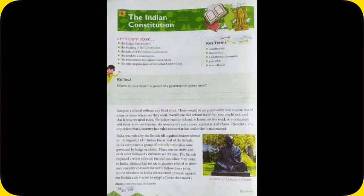Imagine a school without any fixed rules. There would be no punctuality and anyone would come or leave whenever they want. Would you like school then? No, you would not, and this is why we need rules. We follow rules in school, at home, on the road, in a restaurant, and even in movie theatres. An absence of rules causes confusion and chaos.